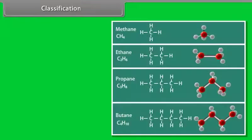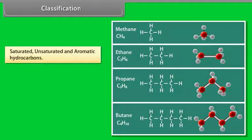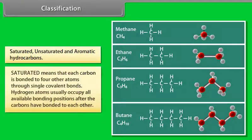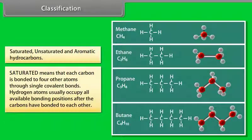Depending upon the types of carbon-carbon bonds present, hydrocarbons can be classified into three main categories: saturated, unsaturated and aromatic hydrocarbons. Saturated means that each carbon is bonded to four other atoms through single covalent bonds. Hydrogen atoms usually occupy all available bonding positions after the carbons have bonded to each other.